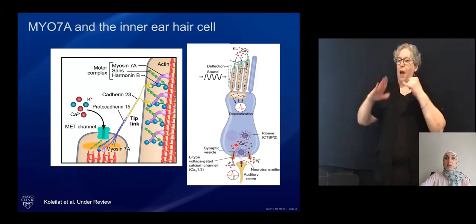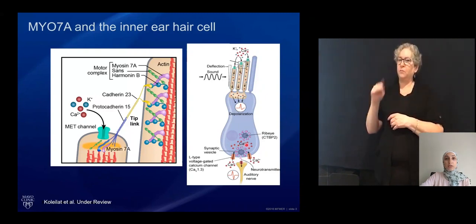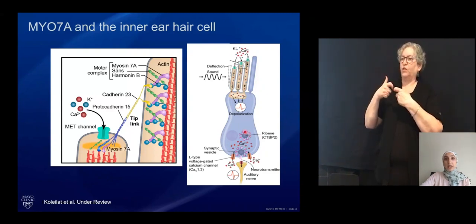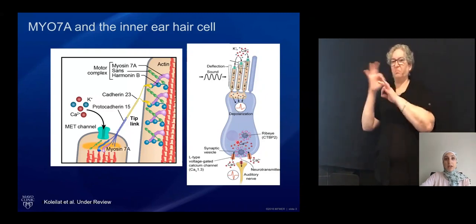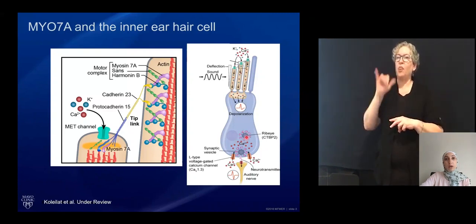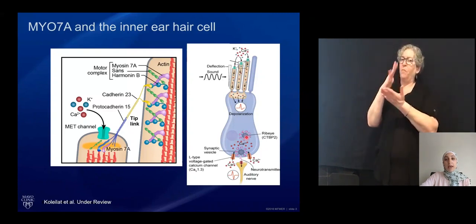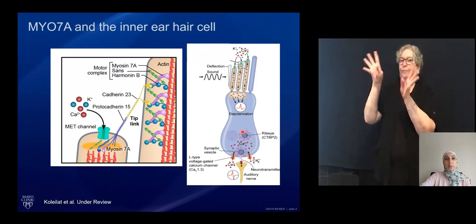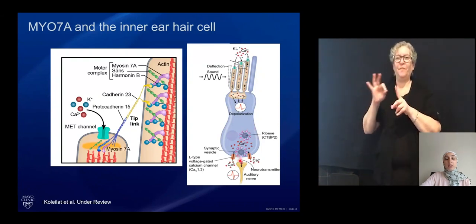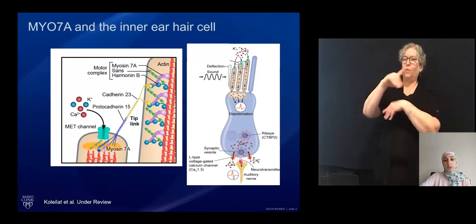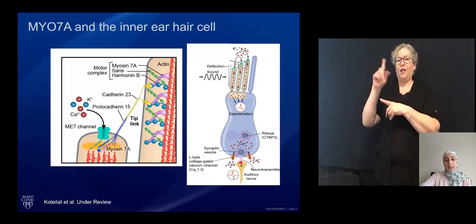Calcium then mediates the release of glutamatergic vesicles that are part of a structure called a synaptic ribbon. This structure has a main central component called ribeye and has a halo of glutamatergic vesicles. Glutamate is released into the synaptic cleft and binds onto the postsynaptic cell.